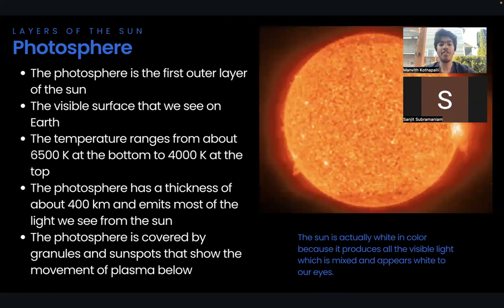The photosphere has a thickness of about 400 kilometers and emits most of the light we see from the Sun. The photosphere is covered by granules and sunspots that show the movement of the plasma below. We'll be talking about granules and sunspots later in the video. The photosphere is also composed of plasma but very thin and transparent.